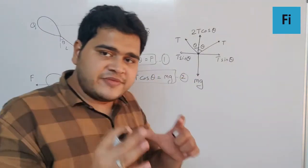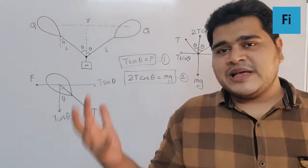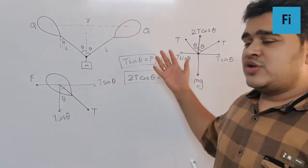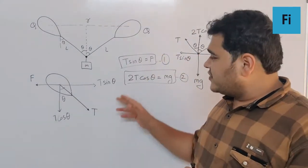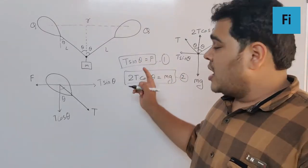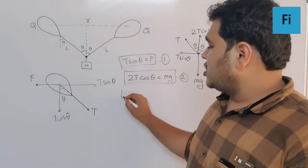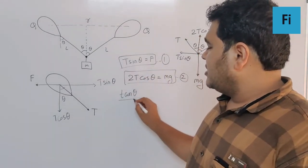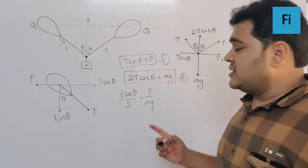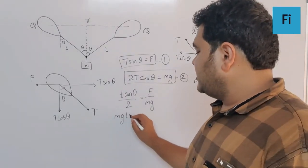If you check the options given in the question, you will not find tension anywhere, which means the best thing is to divide both equations and get rid of tension. If I divide, I have T sine theta upon 2T cos theta. T cancels, sine upon cos is tan theta upon 2, which equals F by mg. So F equals mg tan theta by 2.